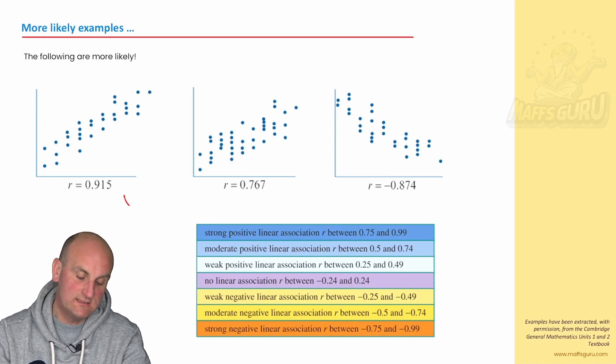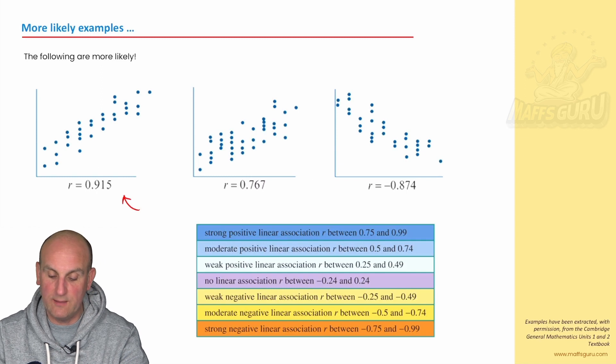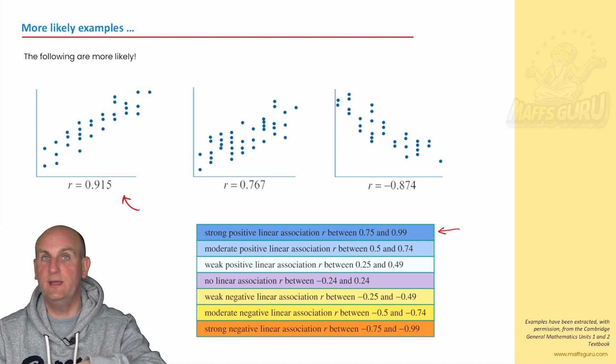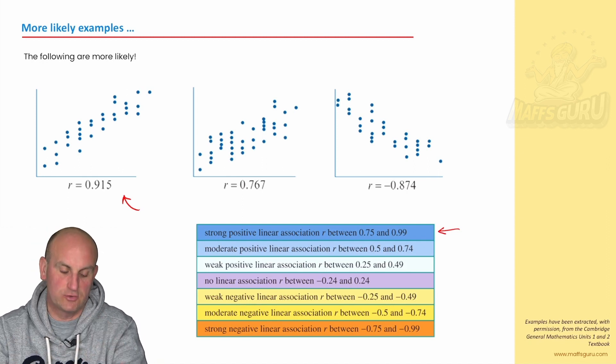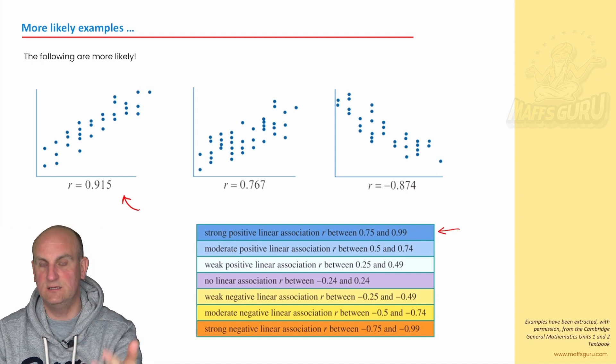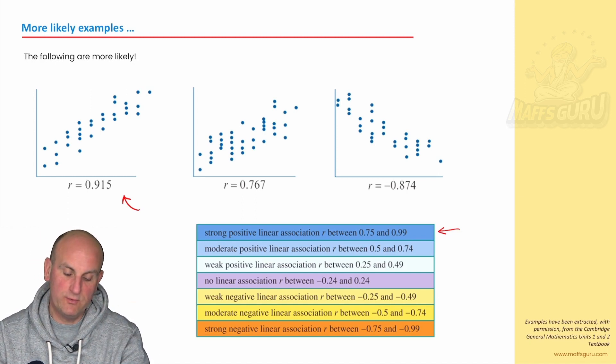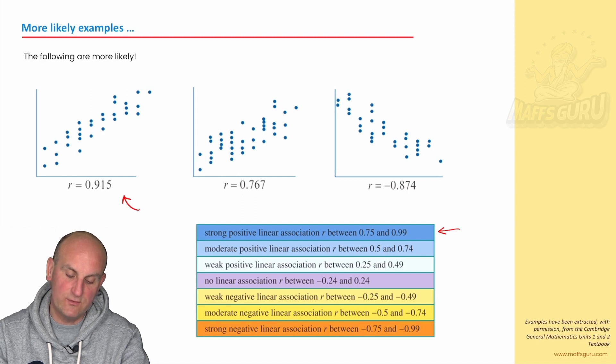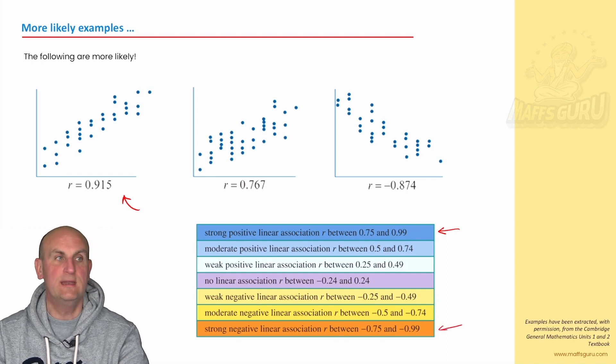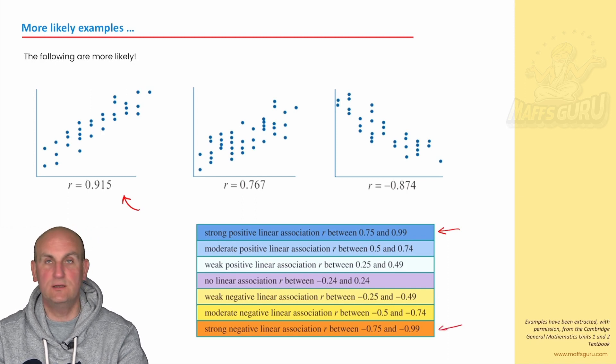Here are some more examples from the table. An R of 0.915, where would that put me? That would put me in here. So, I'd be saying strong positive linear association. 0.767 would also be a strong positive linear association. Minus 0.874 would put me in here, a strong negative linear association. Reading it off using those words.